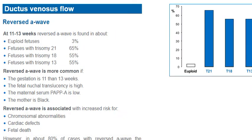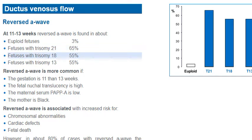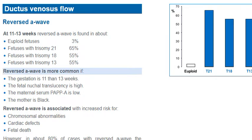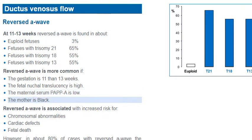At 11 to 13 weeks, reversed A wave in the ductus venosus is found in about 3% of euploid fetuses, in 65% of fetuses with trisomy 21, and in 55% of fetuses with trisomy 18 and trisomy 13. Reversed A wave is more common if the gestation is 11 rather than 13 weeks, the fetal nuchal translucency is high, the maternal serum PAPP-A is low, and the mother is black.